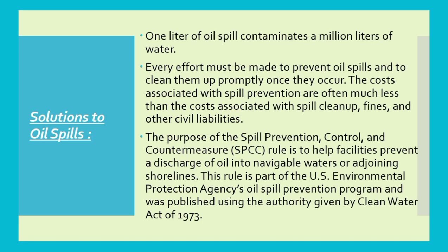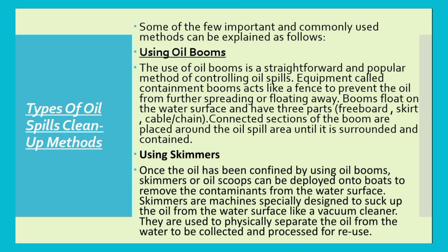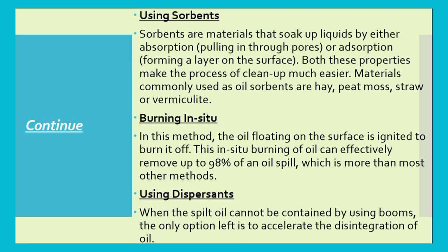For solutions, oil booms are used when oil spillage needs to be confined to a specific area. Booms consist of three parts: a freeboard, a skirt, and a chain in connected sections. They are used to surround and confine the oil, allowing it to be removed and separated for reuse. Sorbents such as hay, peat moss, or vermiculite have the ability to absorb oil from the water surface and remove petroleum products.